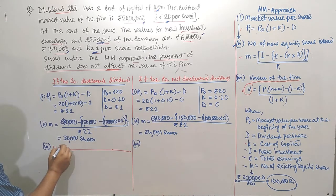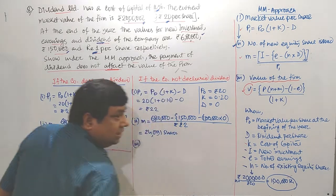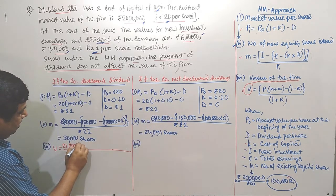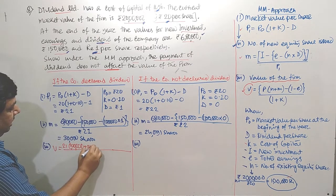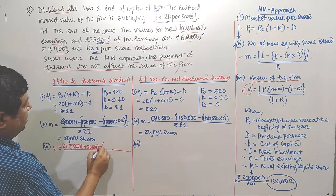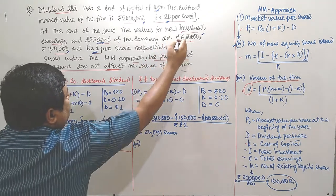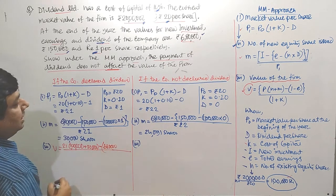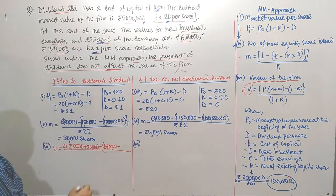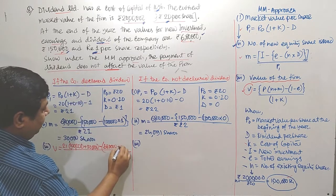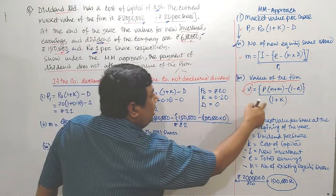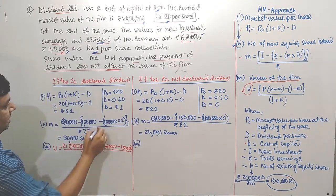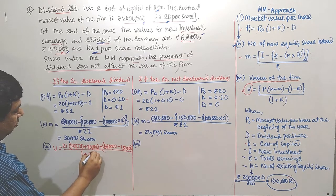For case 1 (dividend declared): V = 21 × (1,00,000 + 30,000) − 6,80,000 + 1,50,000, divided by (1 + 0.10).